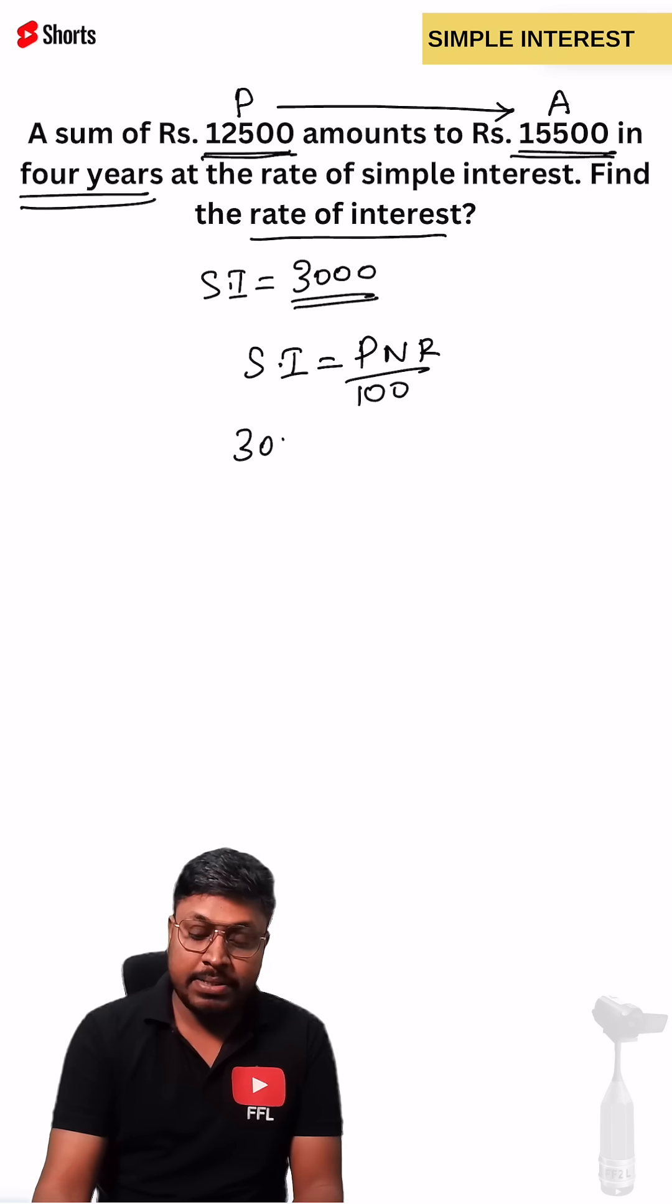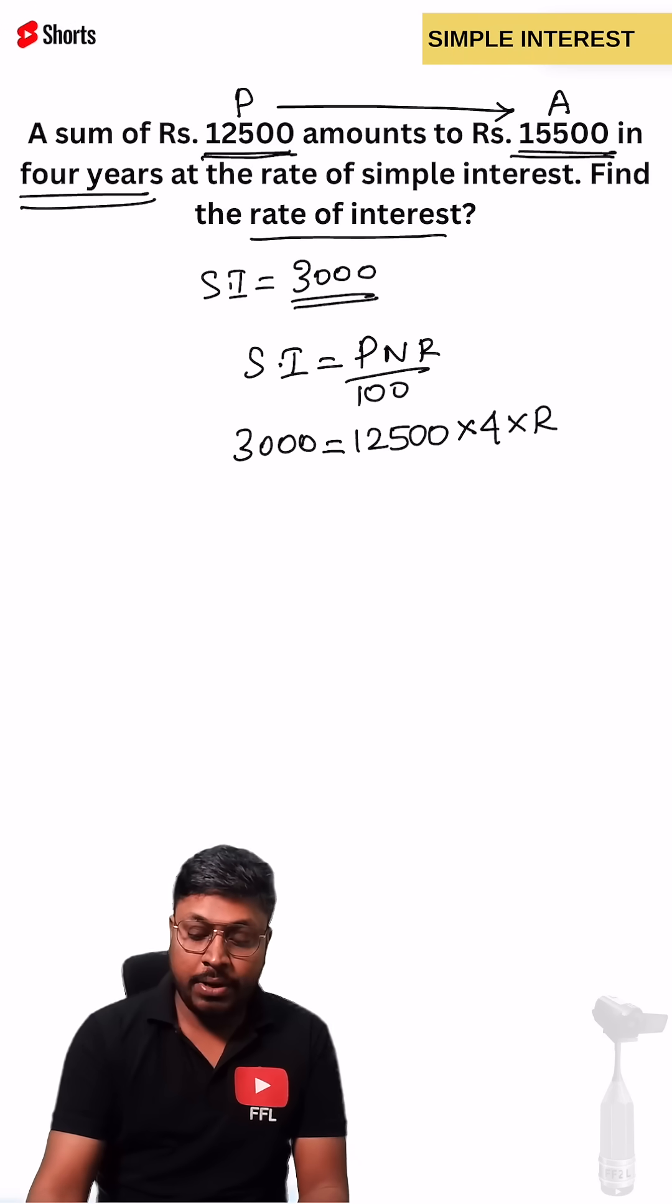Simple interest will be 3,000. Principal, what they have invested, is 12,500. Number of years is 4. Rate of interest is what we need to find in the question.